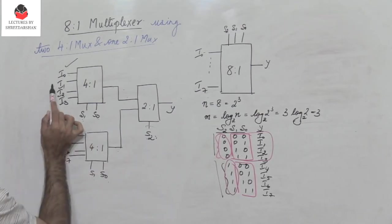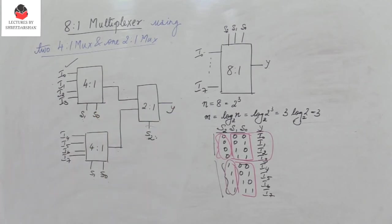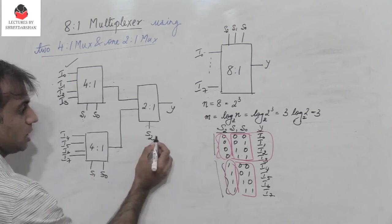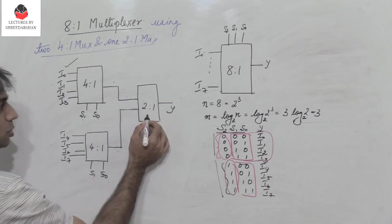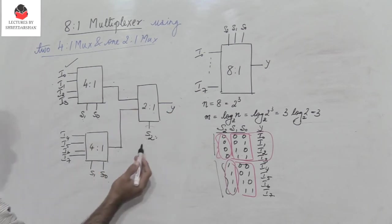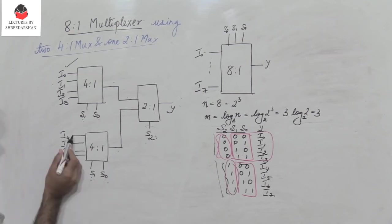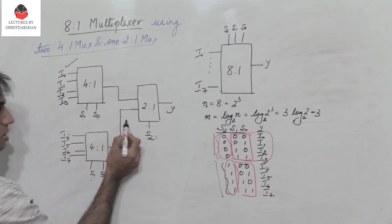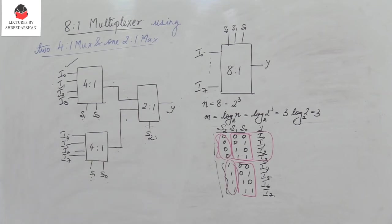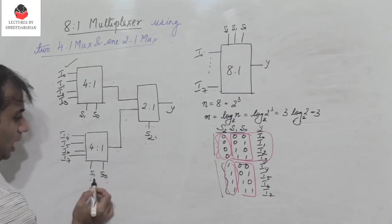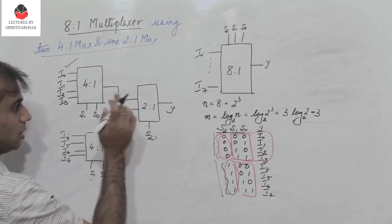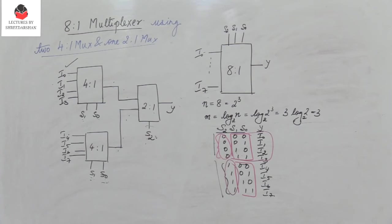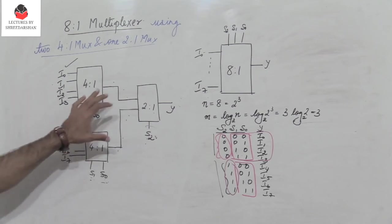When S2 is 1, the second 4-to-1 MUX is selected — its output feeds through the 2-to-1 MUX to the final output Y. So when S2 is 1 and S1 S0 is 0 0, i4 is selected and appears at output Y. Similarly, when S2 is 1 and S1 S0 is 1 1, i7 appears at output Y. This is how we design an 8-to-1 MUX using two 4-to-1 MUXes and a single 2-to-1 MUX.